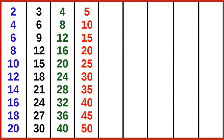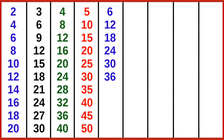6 ones are 6, 6 twos are 12, 6 threes are 18, 6 fours are 24, 6 fives are 30, 6 sixes are 36, 6 sevens are 42, 6 eights are 48, 6 nines are 54, 6 tens are 60.